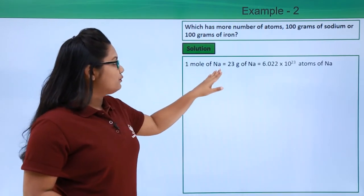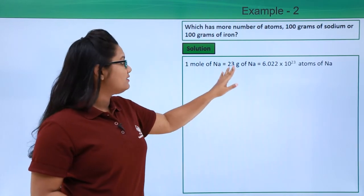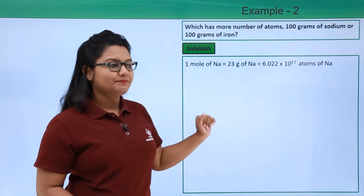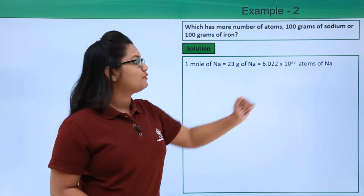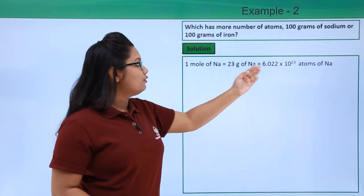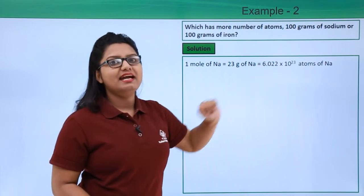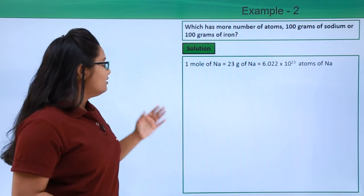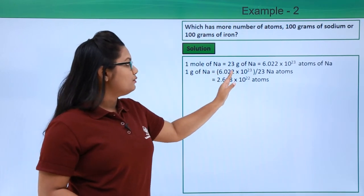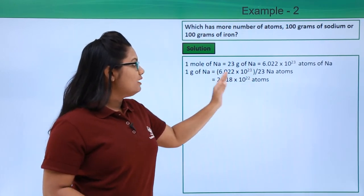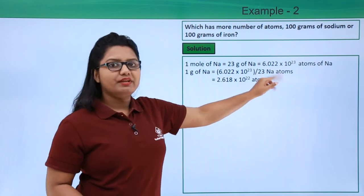Now one mole of sodium has 23 grams of sodium, and also it has Avogadro number of atoms of sodium, which is 6.022 × 10^23 atoms of sodium. So 1 gram of sodium must be having 6.022 × 10^23 divided by 23 sodium atoms.